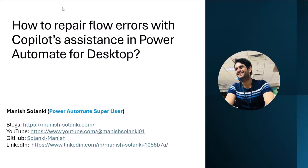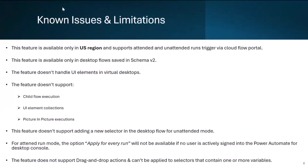This feature is available only in the US region and supports only attended and unattended run mode scenarios. It works for desktop flows saved in schema version 2.0. Limitations include: it cannot add a persistent selector for desktop flows triggered in unattended mode; it cannot suggest error fixes for UI elements in virtual desktops; it does not support child flow execution, UI element collections, or picture-in-picture execution; Apply for Every Run is available only if there is an active user session in the Power Automate for Desktop console; and it does not support drag-and-drop actions or selectors containing one or more variables.